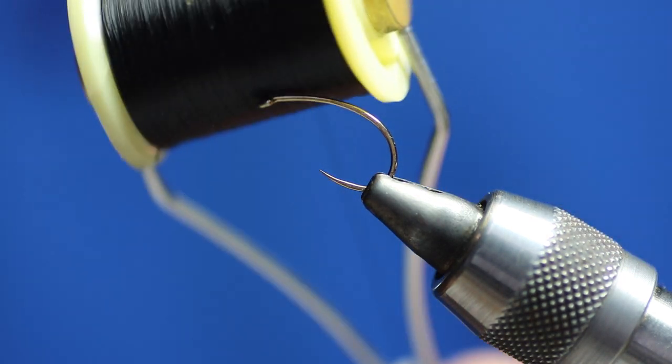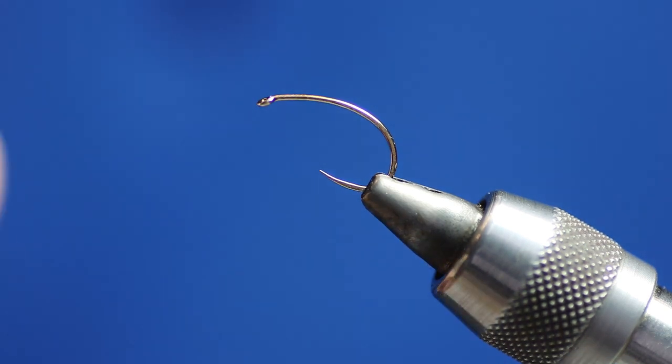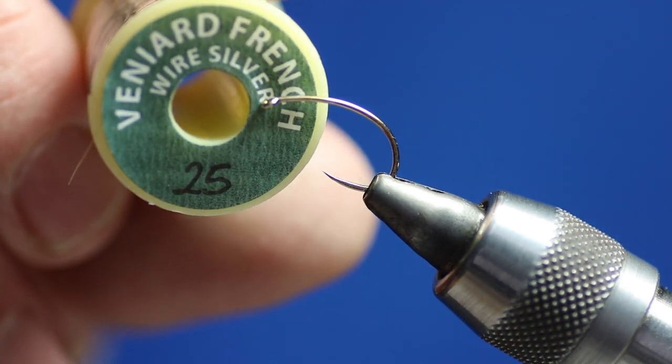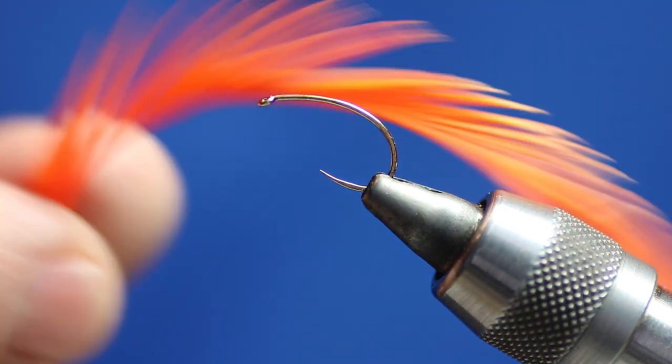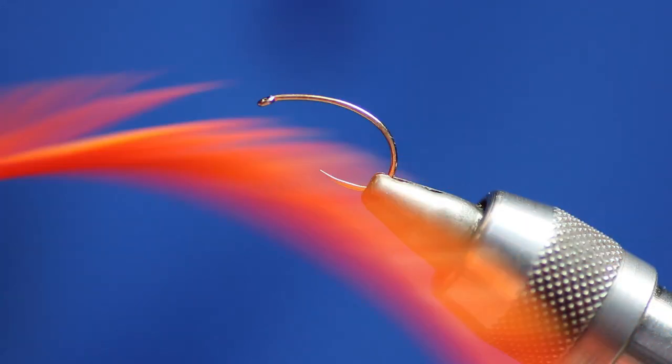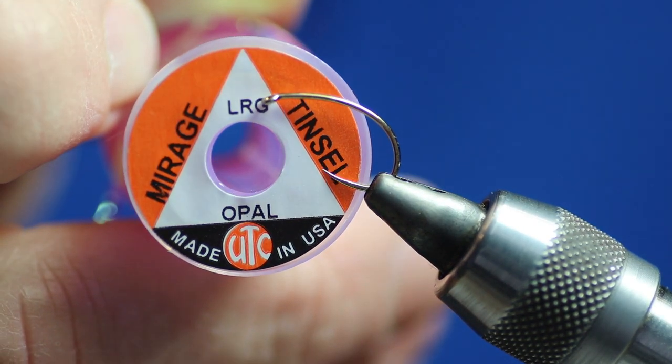We're going to need some 14-0 Veevus black thread. We're going to need some silver wire for the rib. As I said it's very, very basic. We're going to need some orange goose biots for the cheeks, and we're going to need some UTC enlarge for the thorax cover.